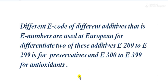Point number three: E codes. Different E numbers are used in Europe to differentiate these additives. E200 to E299 is for preservatives, and E300 to E399 is for antioxidants.